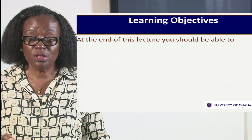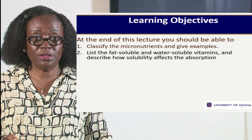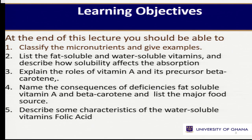Eating a lot of fruits and vegetables gives us almost all our micronutrients. That's why they are called protective nutrients — they protect us. Our objectives for today: classify micronutrients and give examples, list fat soluble and water soluble vitamins, explain the role of vitamin A and its precursor beta carotene, name the consequences of deficiencies of fat soluble vitamins, and describe characteristics of water soluble vitamins.